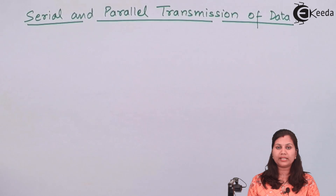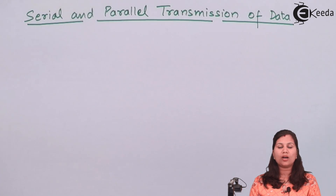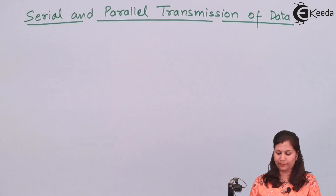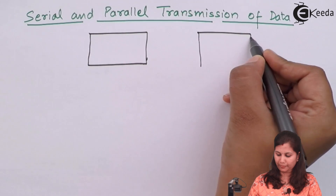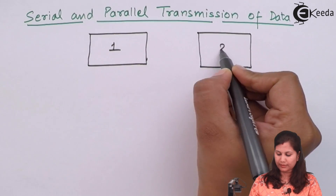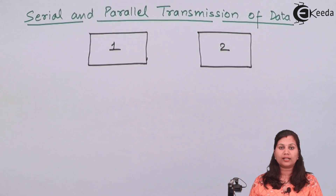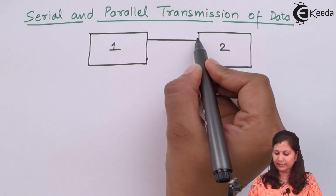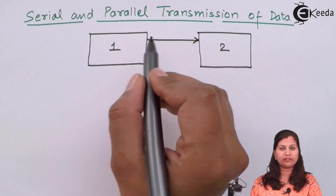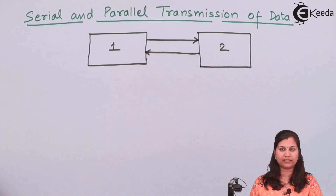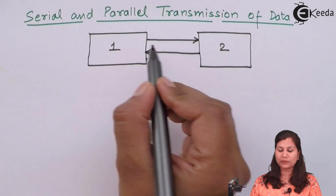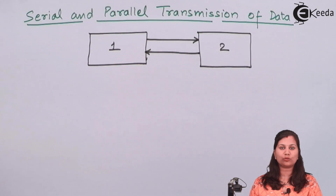Whenever two components are communicating with each other, communication means that they are either transmitting data between each other, or one component is receiving and sending data. Suppose component number one is sending the data, so component number two will receive that data, and vice versa. This transmission of data taking place between two components is known as communication.